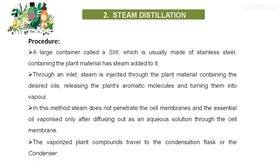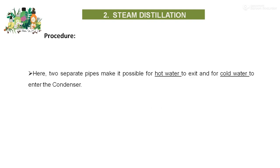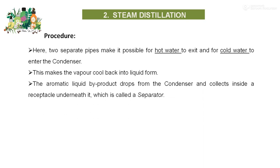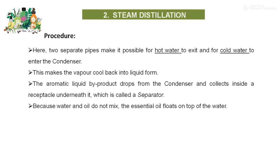Vaporized plant compounds travel through the condenser, where two separate pipes make it possible for the hot water to exit and for the cold water to enter. This makes the vapor cool back into liquid form, and the aromatic liquid by-product drops from the condenser and collects inside a receptacle underneath it, called a separator. Because water and oil do not mix, the essential oil floats on top of the water.